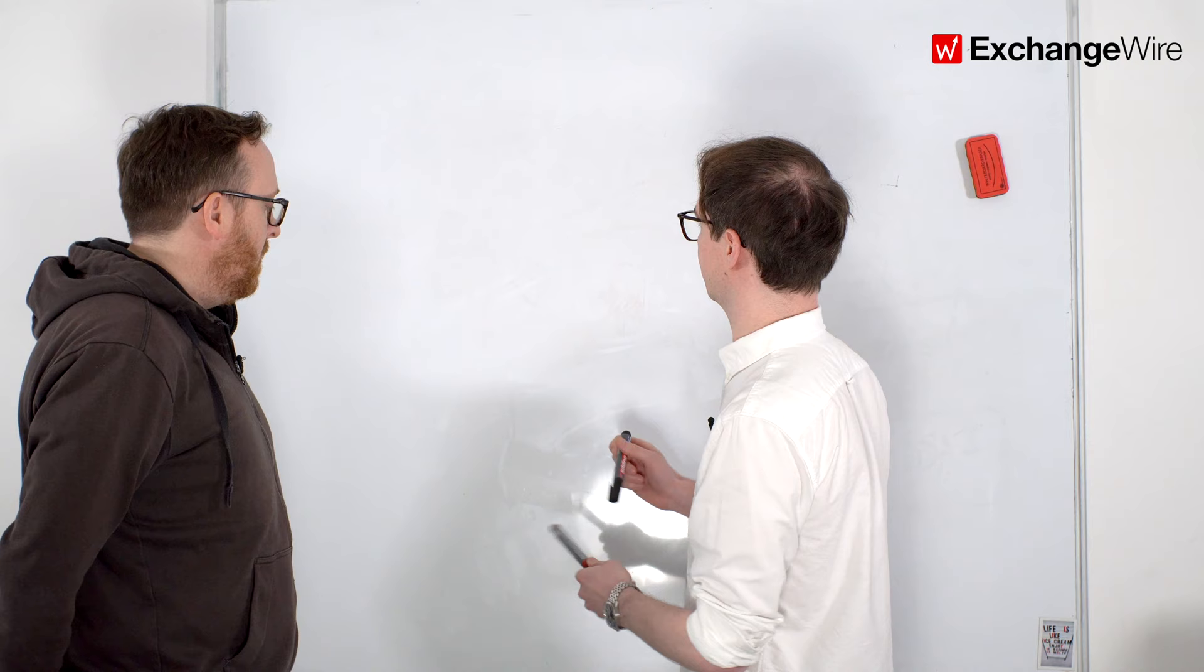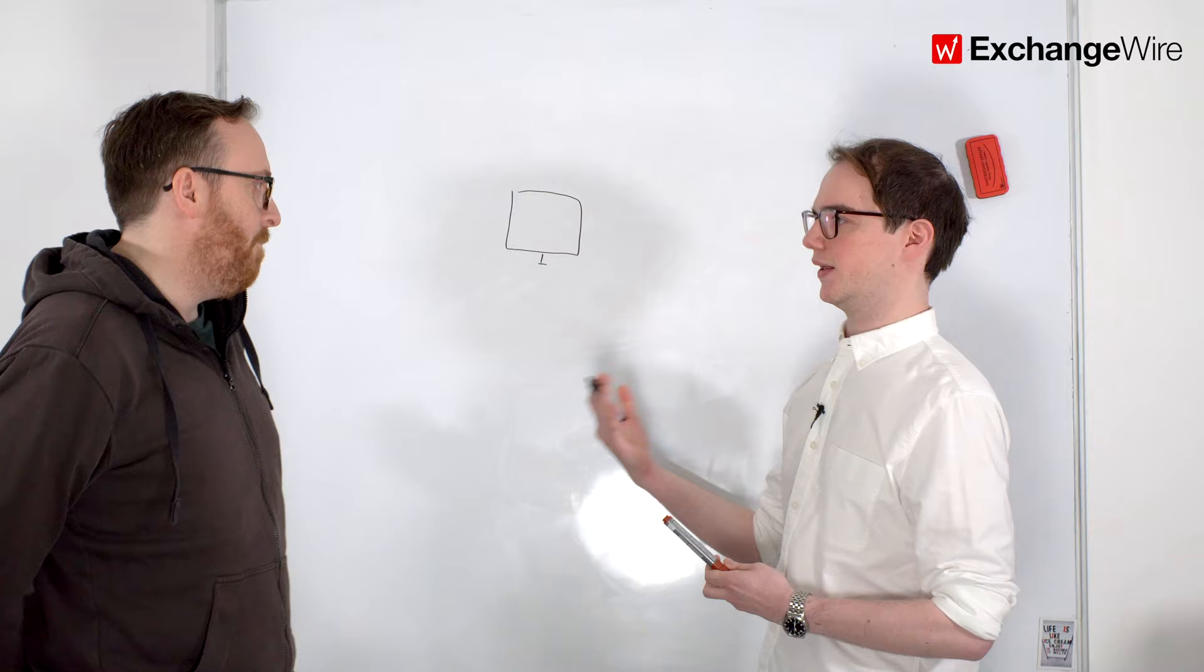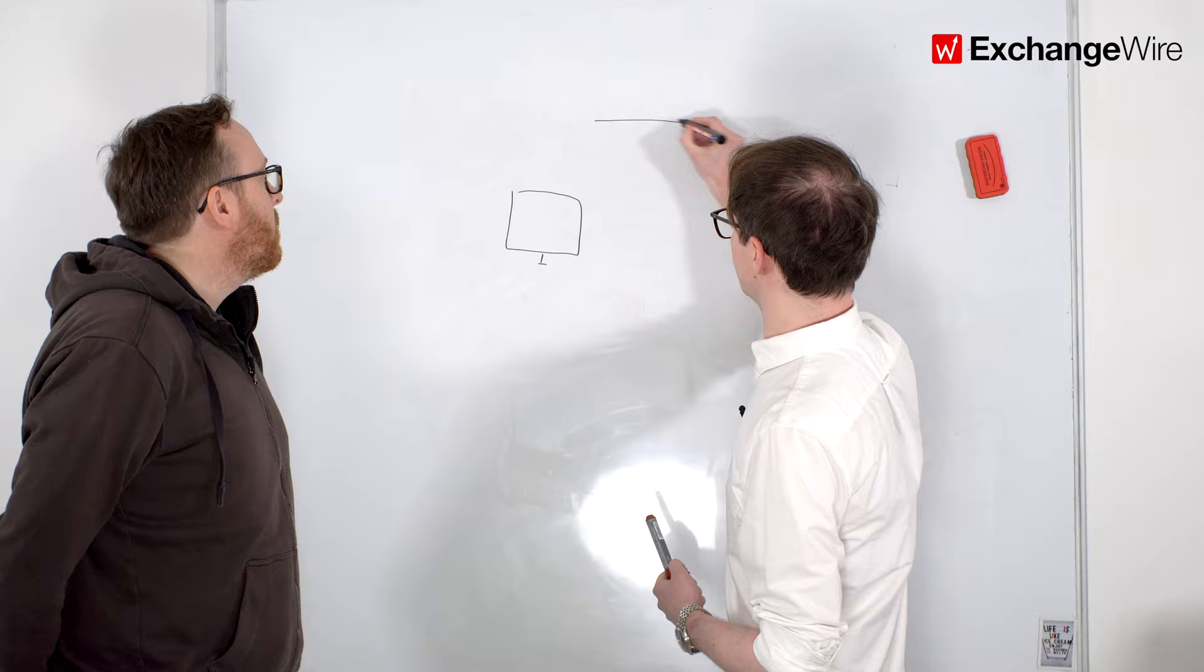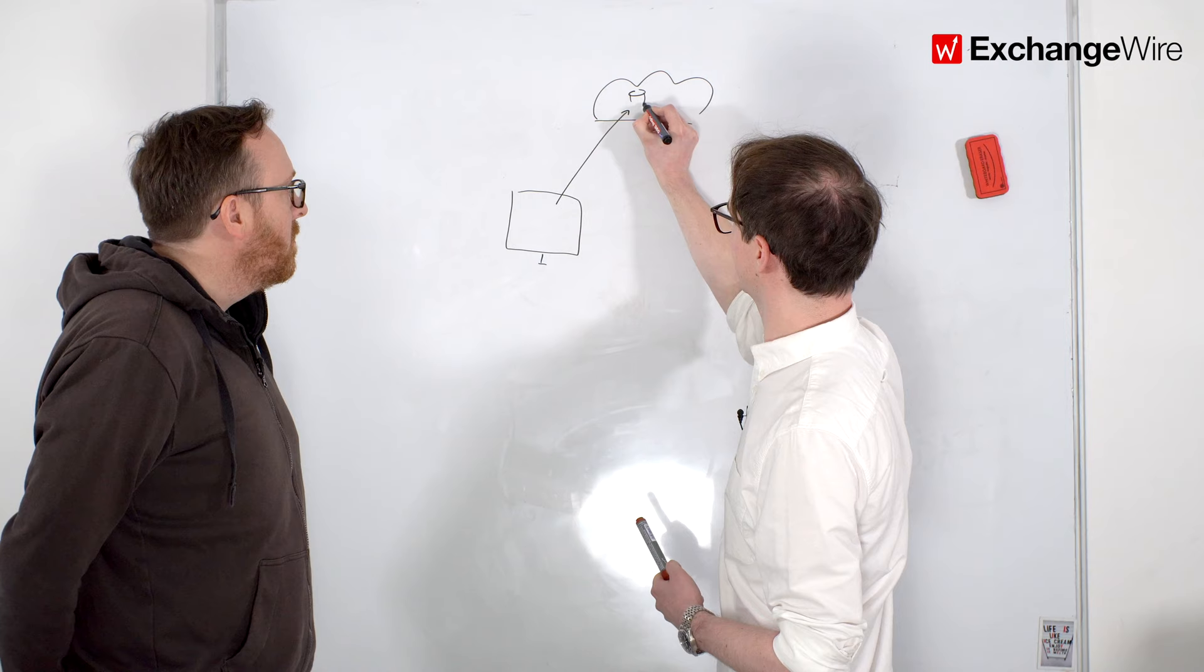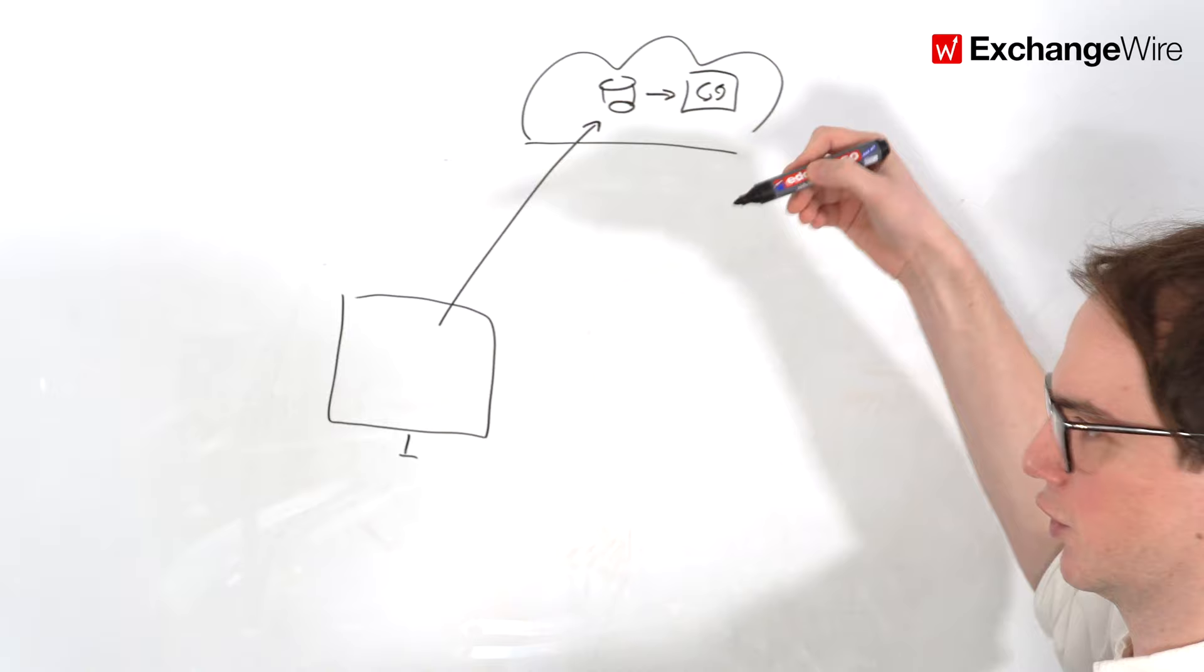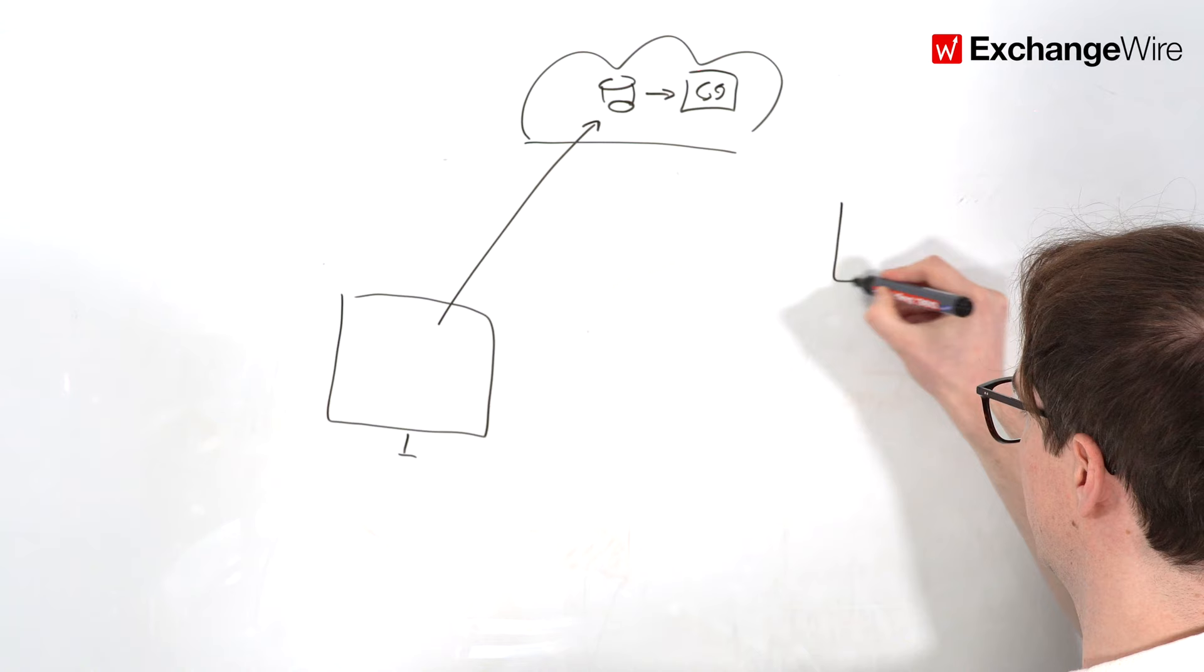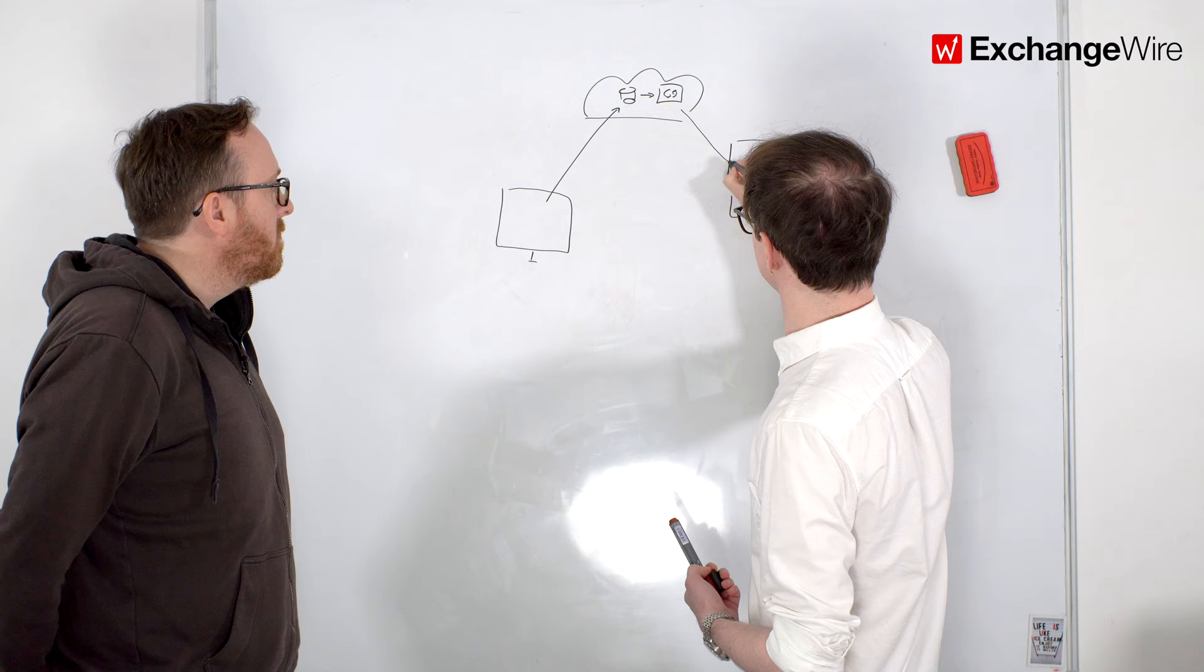So edge computing is all about processing data very closely to where it is generated. A really good way to explain edge computing is actually to start with cloud computing and then contrast it to that. So with the classic cloud computing model, if we think about publishers, if a user comes to their site, they want to collect first party data from the user and then build out segments for those users.